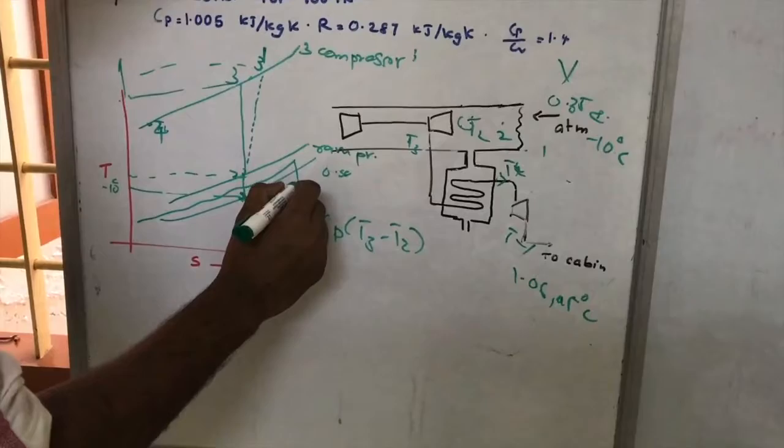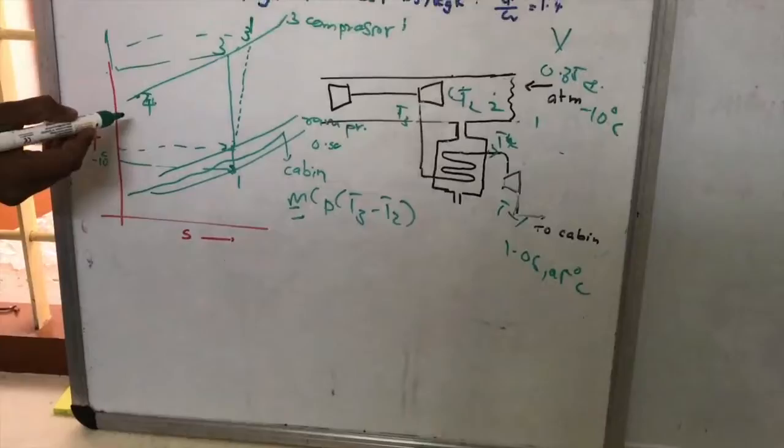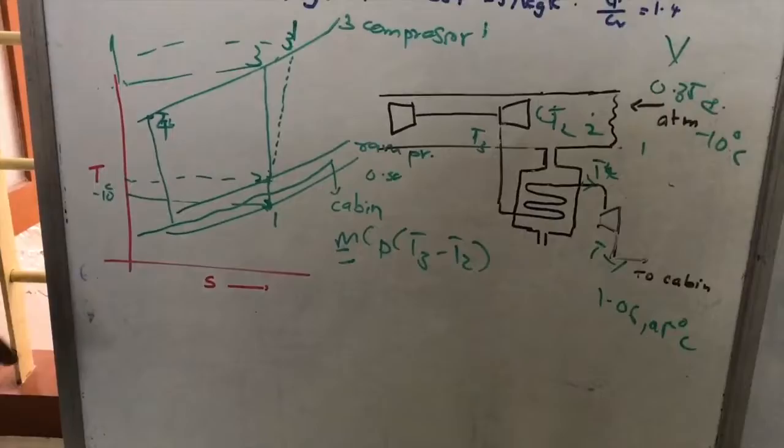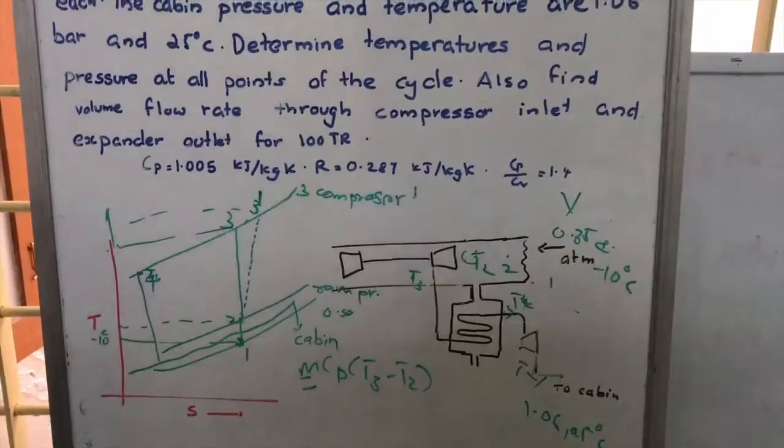The cabin pressure line is drawn. Process 4 to 5 is an adiabatic expansion process for the ideal case. In the expansion process, it is given that there is an efficiency of 0.8.